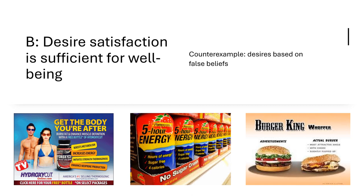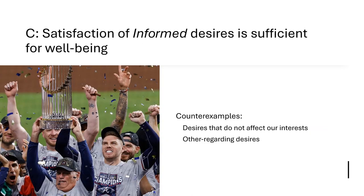Desire satisfaction theorists generally refine the view a little bit further. Let's call it version C: the satisfaction of informed desires is sufficient for well-being. This gets us out of some of these desires based on ignorance of one kind or another. This view says that as long as your desires aren't based on some kind of false belief, if they get satisfied, that's what makes a life better. Compare two lives: one has a bunch of informed desires satisfied, another doesn't — the one with more informed desires satisfied is the better one. That doesn't sound ridiculous, but there are some counterexamples.